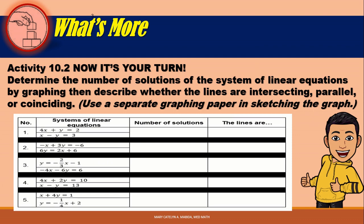Now it's your turn — Activity 10.2. Determine the number of solutions of the system of linear equations by graphing, then describe whether the lines are intersecting, parallel, or coinciding. Use a separate sheet of graphing paper. We have 5 systems of linear equations to work on. Indicate the number of solutions — one, none, or many — and describe the kind of system.